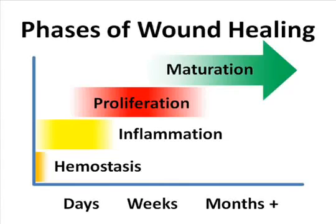Medical authorities often describe wound healing in terms of overlapping phases that occur in the days, weeks, and months following an injury. These phases are hemostasis, inflammation, proliferation, and maturation.